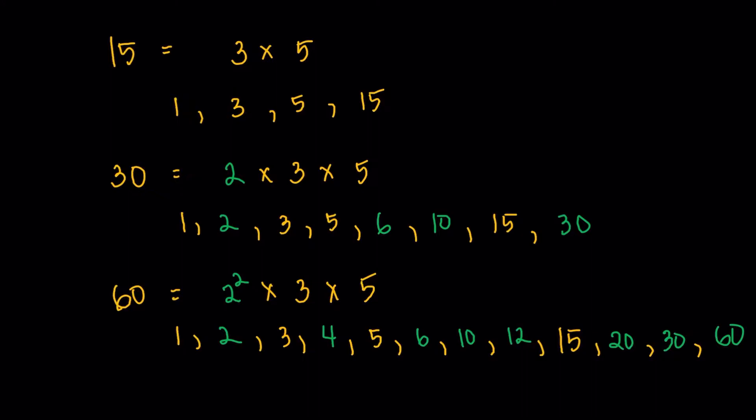Alright, so taking a look at the factors of 15, it's 1, 3, 5, and 15. Obviously they're all odd because there are no even numbers in the prime factorization of 15.